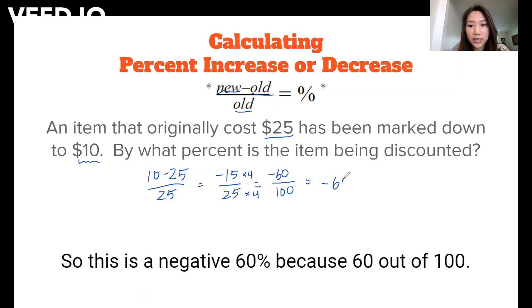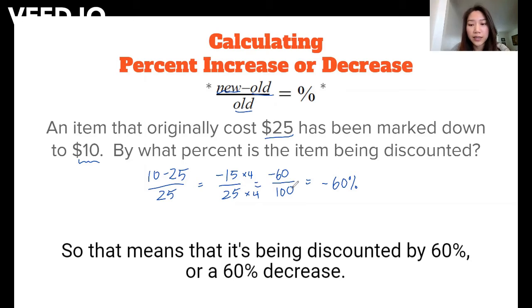So this is a negative 60% because 60 out of 100. So that means that it's being discounted by 60% or a 60% decrease.